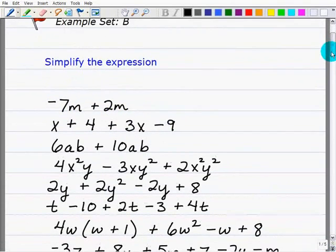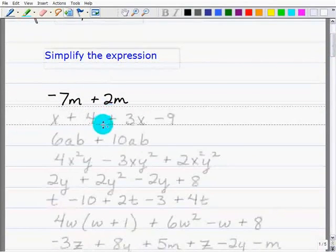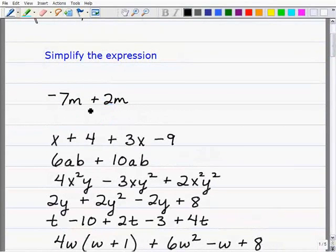So what we want to do is simplify these expressions. In other words, we want to make them as simple as possible. So we have an expression here, for example, negative 7m plus 2m. And the question is, is there a simpler way to write this? And in fact, there is. You have two like terms and these are like because they both have m to the first power.